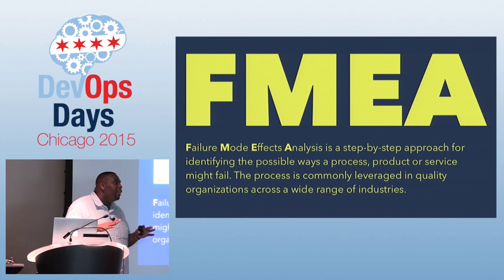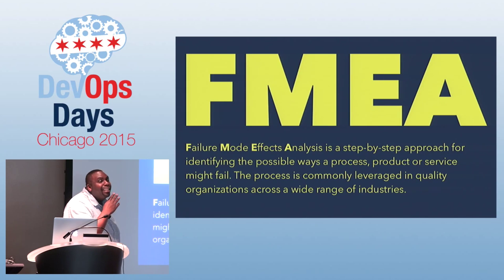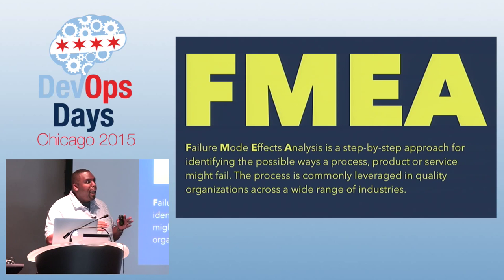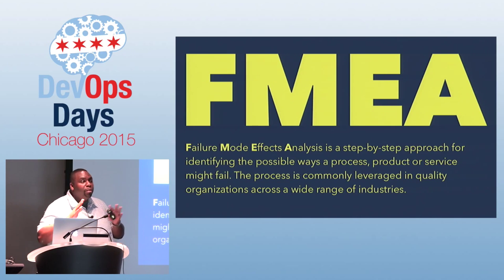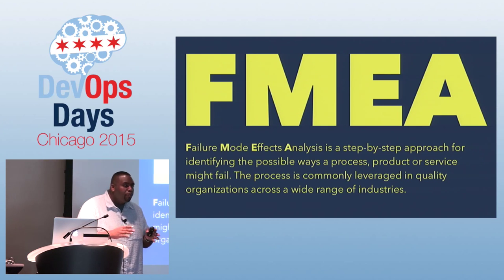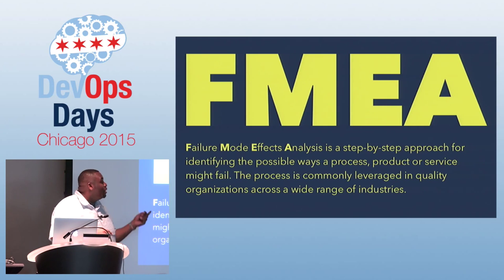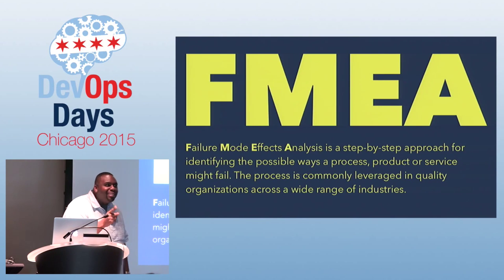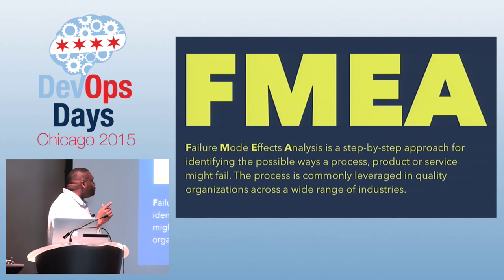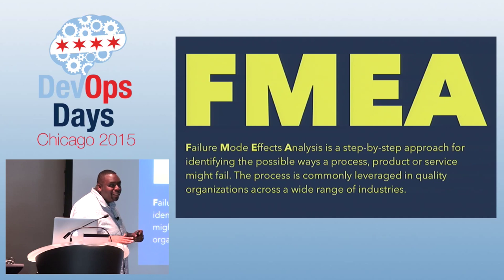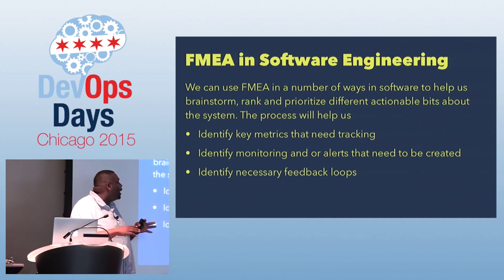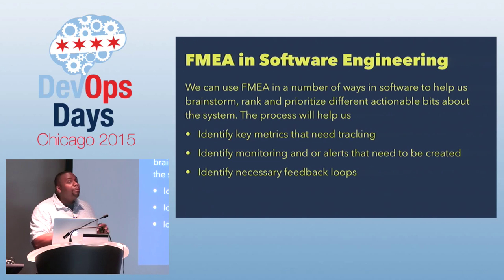What we've done is we've taken a process called the Failure Mode Effects Analysis — it's a mouthful, I know. It's a quality organization tool that came up from the Six Sigma groups. It's this great process that walks you through identifying all your failure modes and assigning particular values to those so that you know where you have exposure. My wife is an industrial engineer. When she started talking about this process years ago, I thought, we can use this in technology — why isn't anybody doing this? So I finally got an opportunity to build it and use it for software engineering. What we've been using it for at GrubHub is to identify key metrics that need tracking, monitoring alerts that can be created as a result, and identifying all of the necessary feedback loops to make sure that everyone has information about the system.